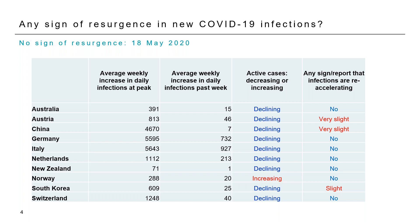That is the crux of the economic debate — can progress on the health side be maintained while you unlock an economy? So far we're not really sure. Some countries seem able to continue managing this exceptionally well. I would flag Australia as part of that — they've managed it well right from the start. New Zealand did a brilliant job. Germany, Austria, and South Korea were exceptional.